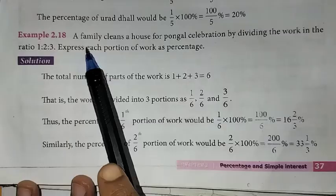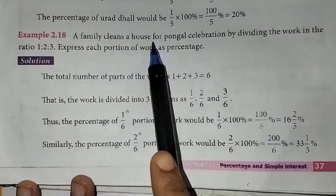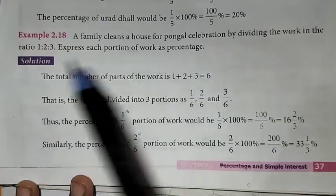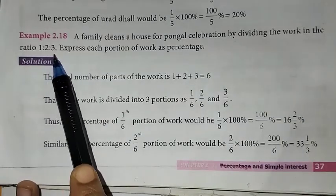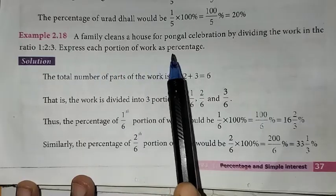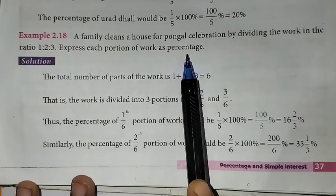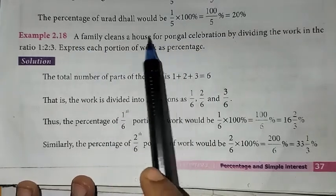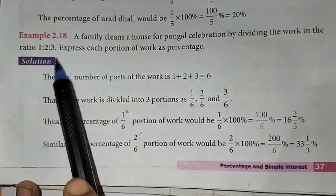In this problem, a family cleans a house for Pongal celebration by dividing the work in the ratio 1 is to 2 is to 3. Express each portion of work as percentage. That is, the family divides the house work for Pongal celebration among 3 people in this ratio.